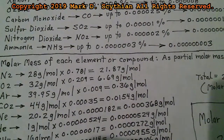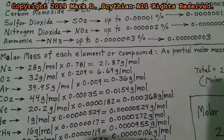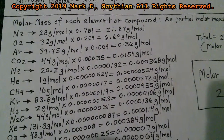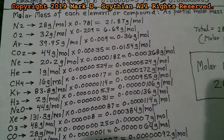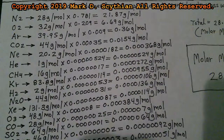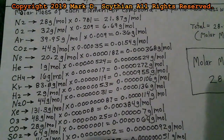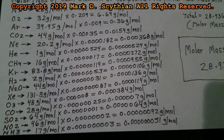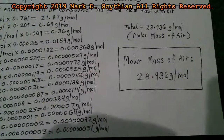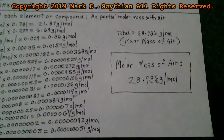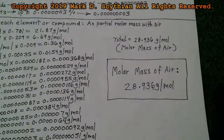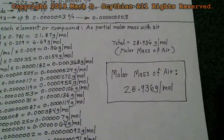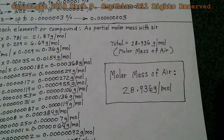That would be dividing the percentages by 100 to get the decimal equivalents. You then account for each partial molar mass of each element or compound all the way down and add them up. Air has a total molar mass of almost 29 grams per mole — 28.936 grams per mole to be exact.